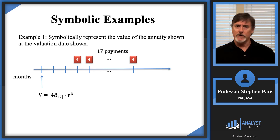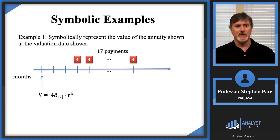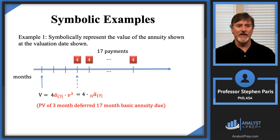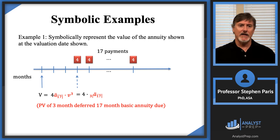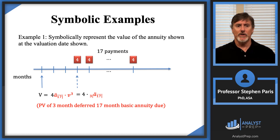Likewise, there's a deferred notation for this too. A-double-dot-angle-17 times V-to-the-third can be written with this symbol in red: three-deferred A-double-dot-angle-17. I'm now thinking of this as a three-month deferred, 17-month basic annuity-due. It's three-month deferred because with an annuity-due, the first payment is at the beginning of the first period, so the start date is at the dotted line — three months after the original valuation date.